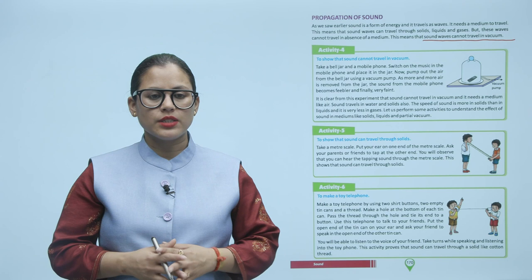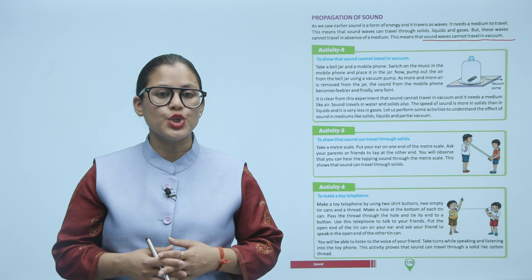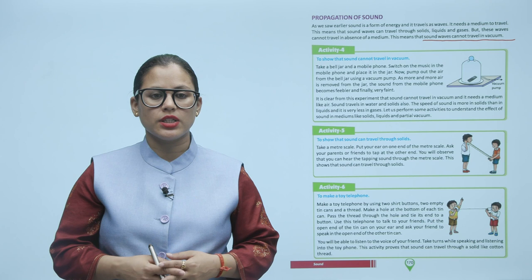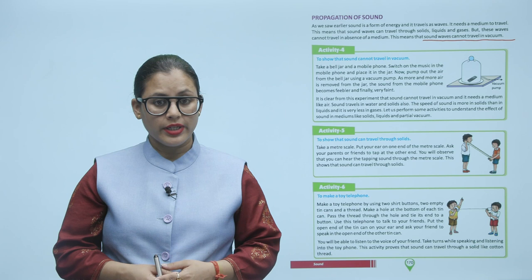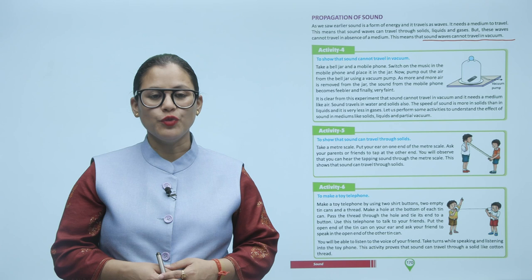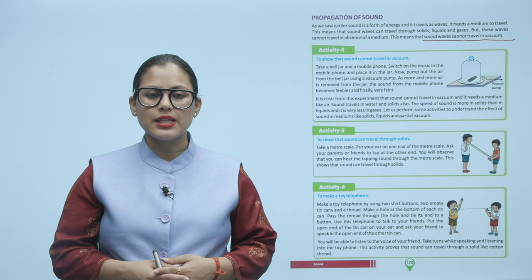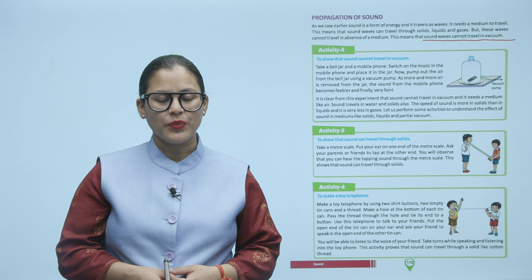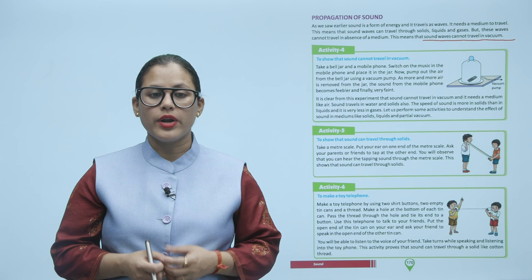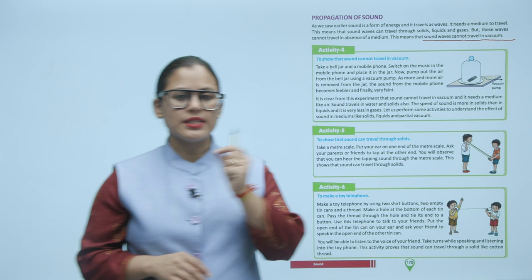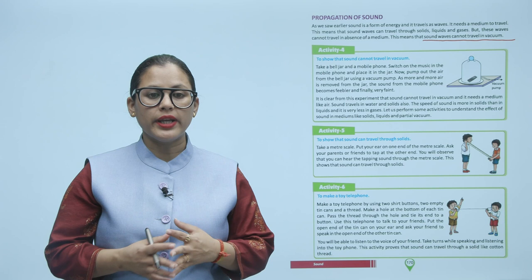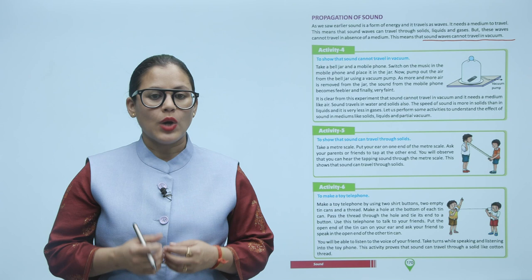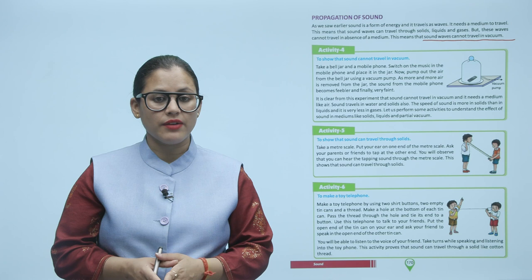Activity 6: To make a toy telephone. Make a toy telephone using two shirt buttons, two empty tin cans, and a thread. Make a hole at the bottom of each tin can, pass the thread through the hole, and tie its end to a button. Put the open end of the tin can to your ear and ask your friend to speak in the open end of the other tin can. You will be able to listen to your friend's voice. This activity proves that sound can travel through a solid like cotton thread.